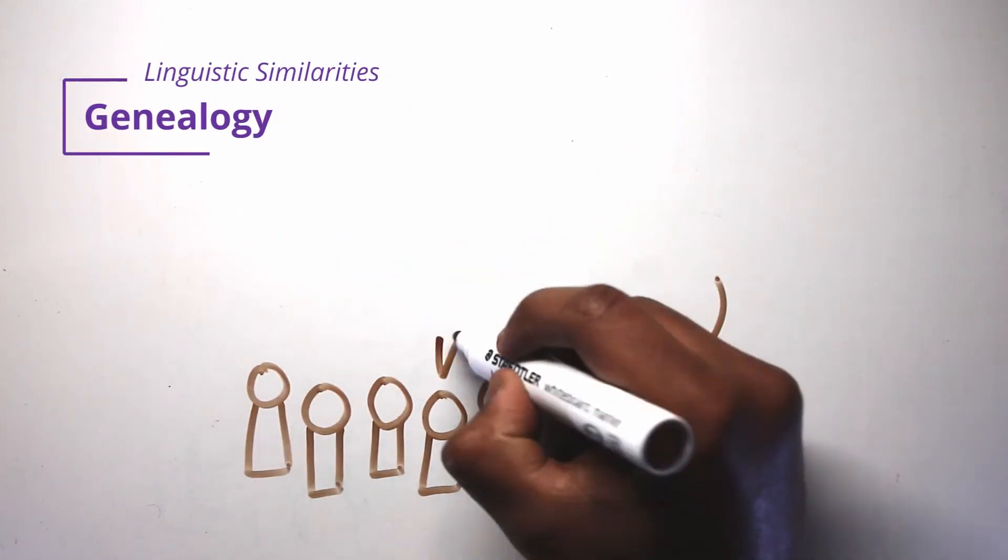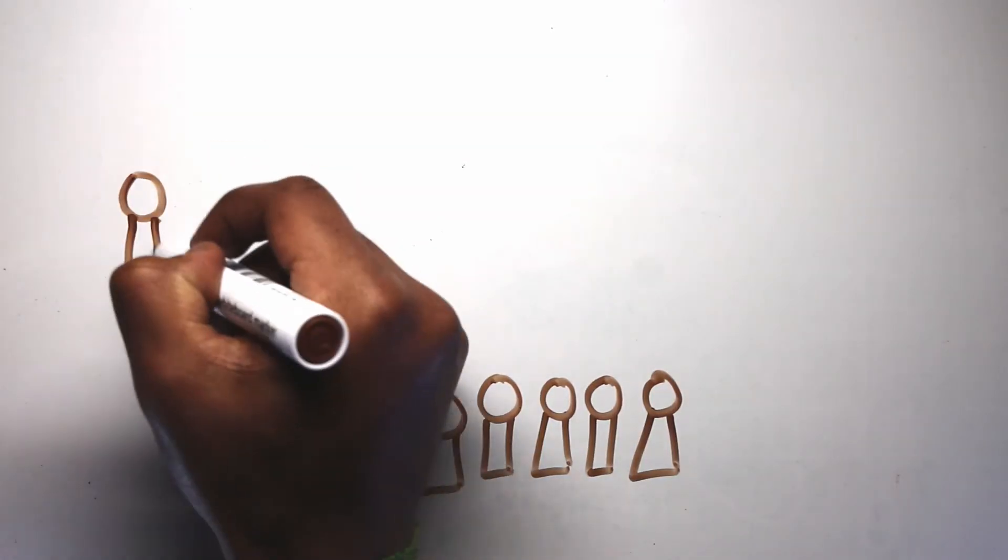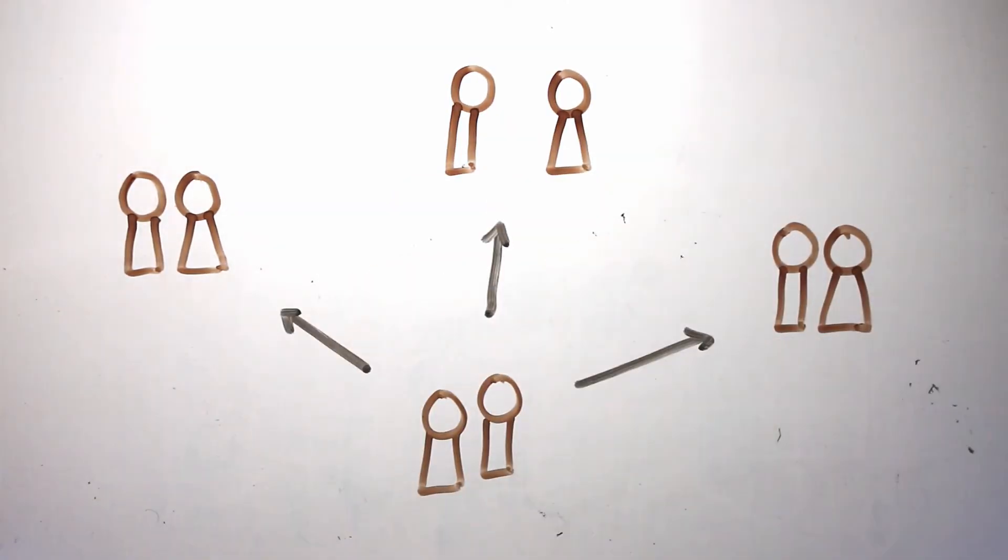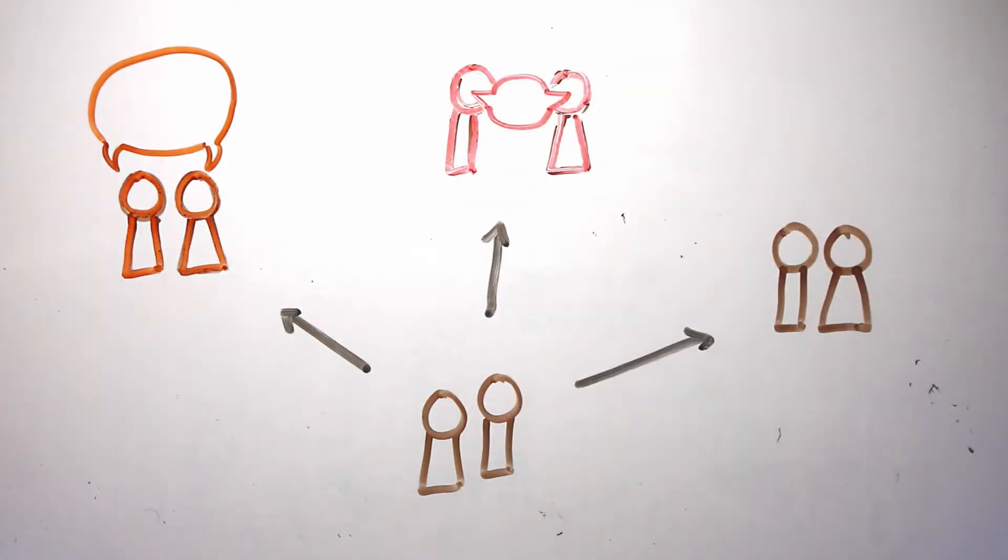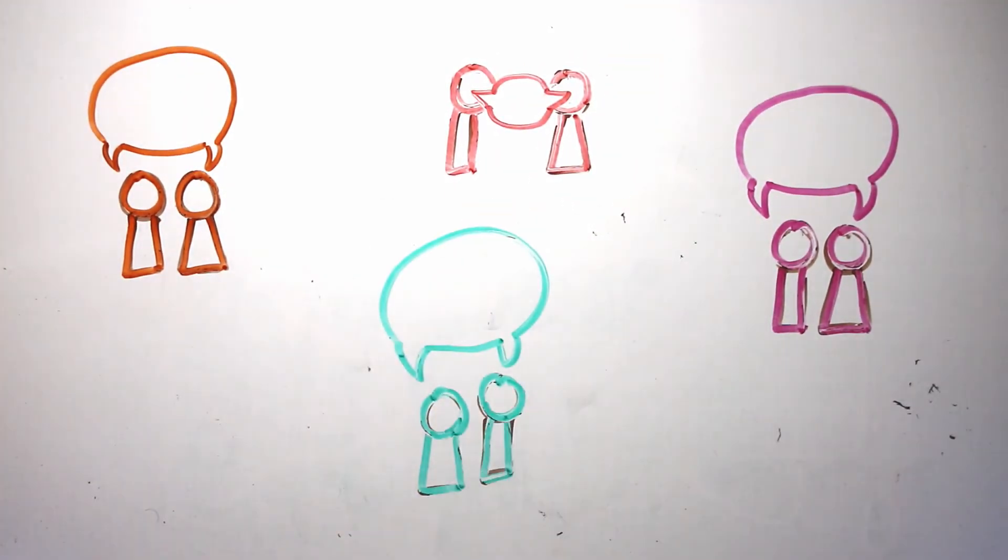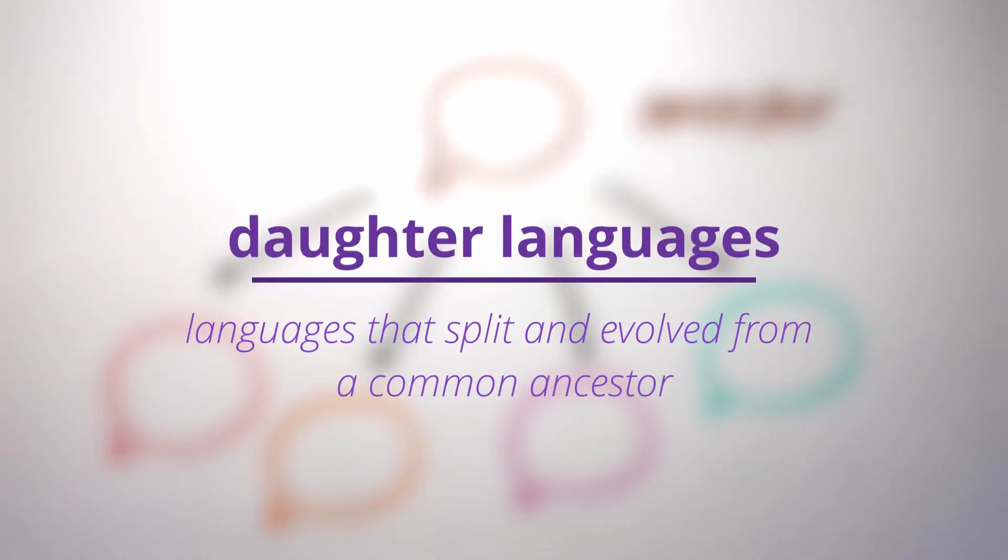Suppose we had a language spoken by a group of people that all lived in the same area. One day, a large number of those people decided to migrate away to faraway lands. As time passes, the languages and cultures of these split-up groups began to diverge and become less and less similar to each other. At one point, new languages emerged, all descended from one ancestral tongue. These languages are all part of a language family, and can be called daughter languages.